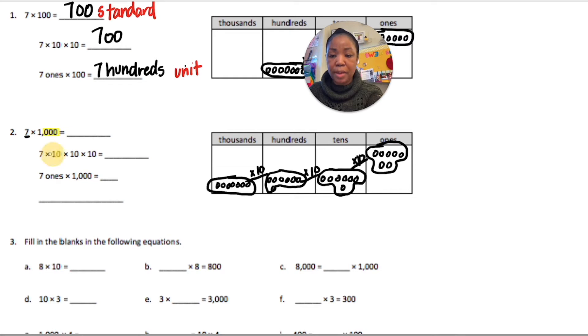That is 7,000. 7 times 10 times 10 times 10 is 7,000. Or we can say we did 7 ones times 1,000, which is 7 thousands.